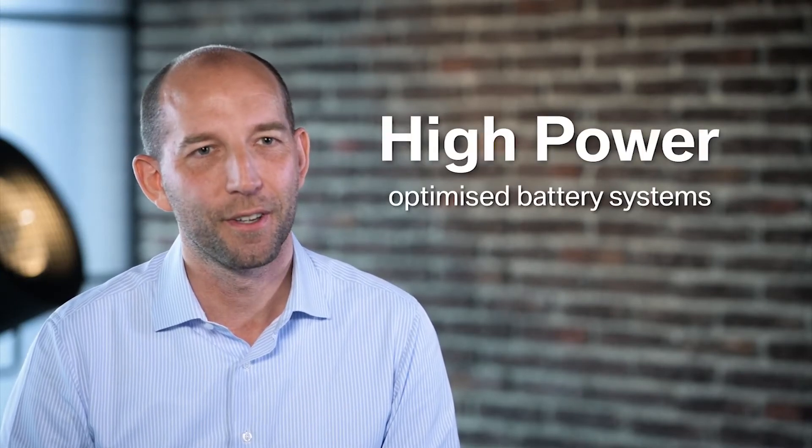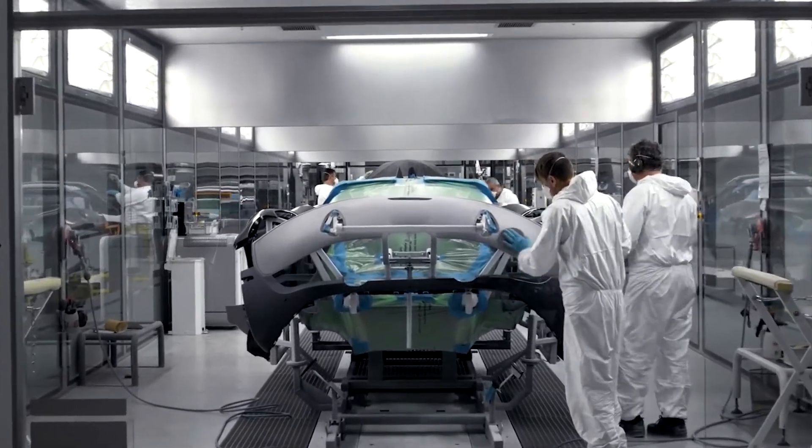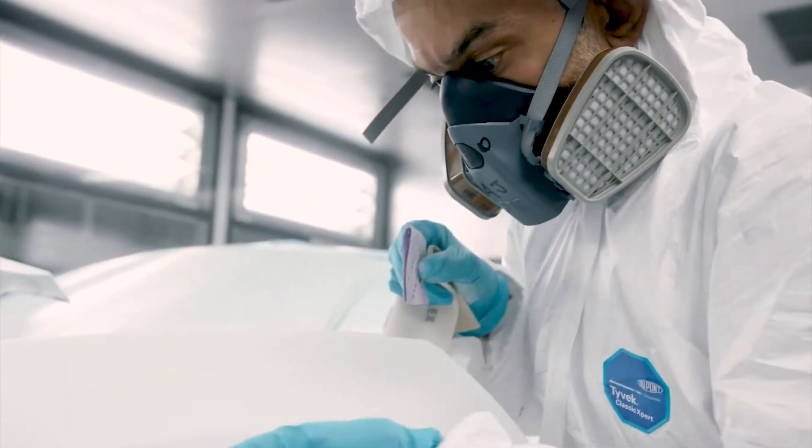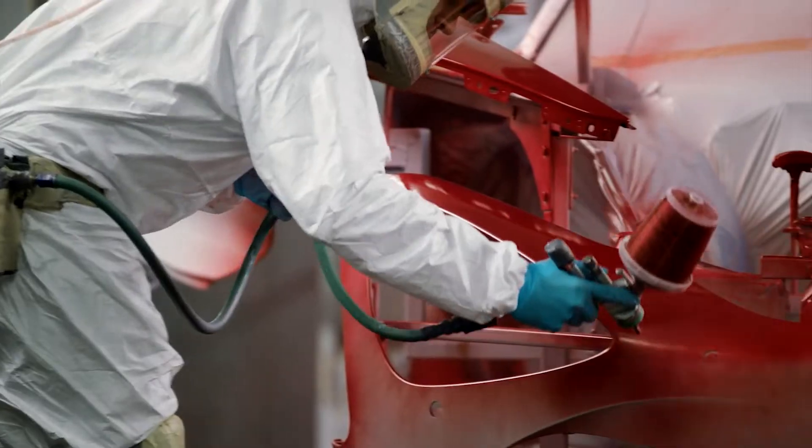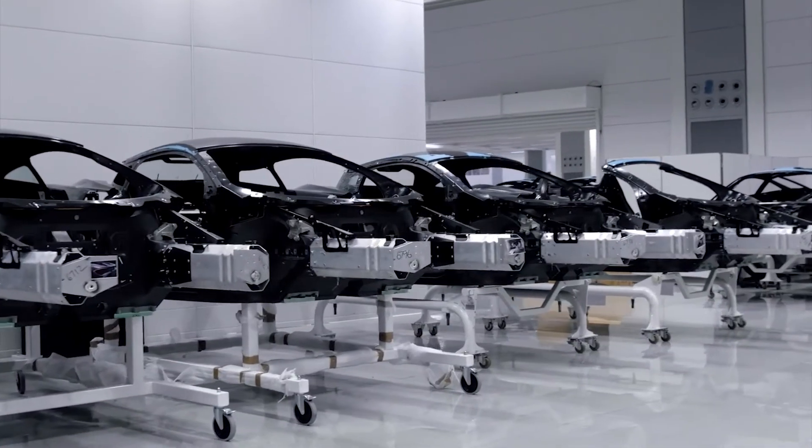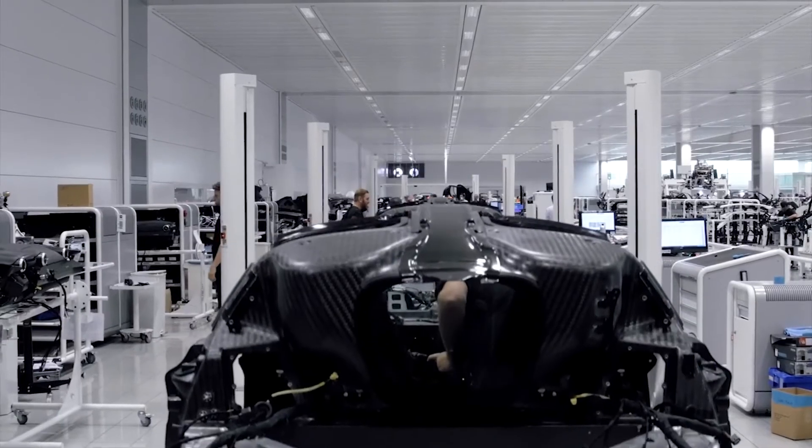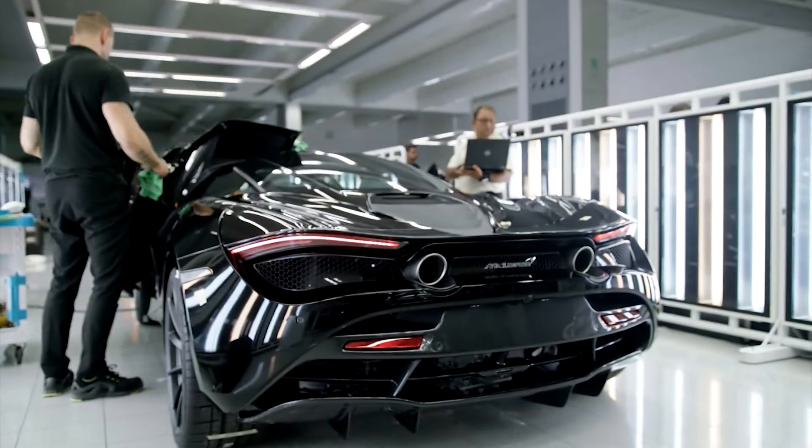The APC6 project was about delivering high power optimized battery systems. The initial idea to start the project was based on a relationship that BMW had with McLaren and both OEMs were on their journey to low carbon emission vehicles.